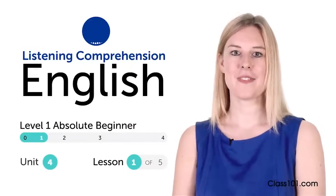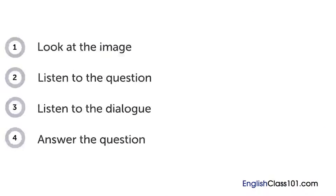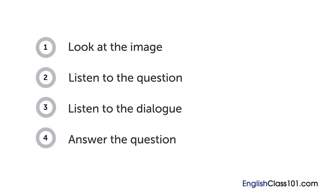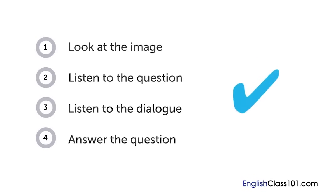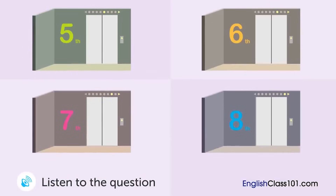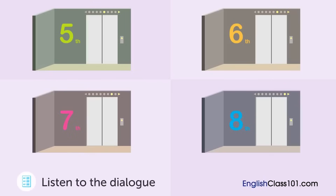Hi everyone, I'm Gabriela. How are your English listening skills? In this video, you'll have a chance to test them out with a quiz. First, you'll see an image and hear a question; next, a short dialogue. Listen carefully and see if you can answer correctly. A woman is in a department store. Which floor is she going to? — 'Excuse me, where are the children's clothes?' 'They're on the fifth and sixth floors.' 'Do you also have baby clothes?' 'Yes, they're on the sixth floor. We have a lot there.' 'Thank you very much. I'll go and have a look there.'